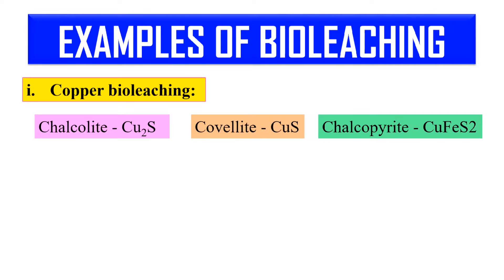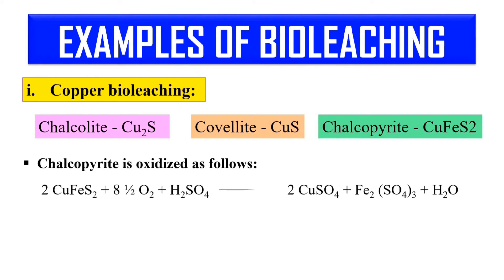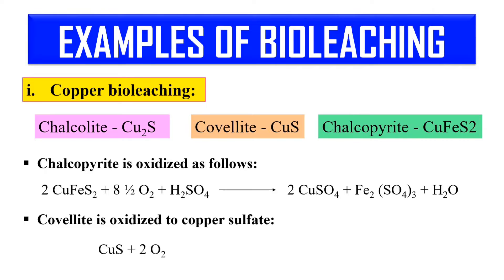Taking the example of Chalcopyrite — it is oxidized in the presence of sulfuric acid and ultimately we get copper sulfate, from which we can extract the copper. Similarly, in the case of Covellite, it is also oxidized by the bacteria and then copper can be extracted.